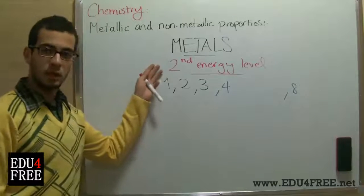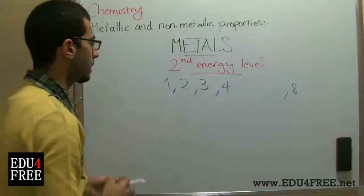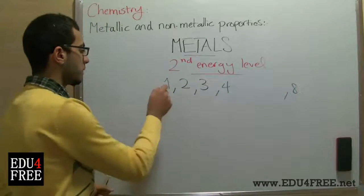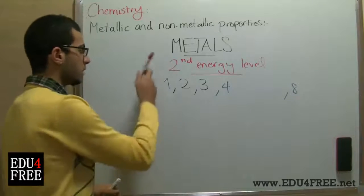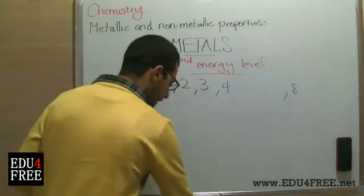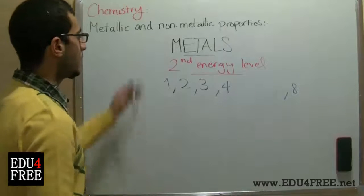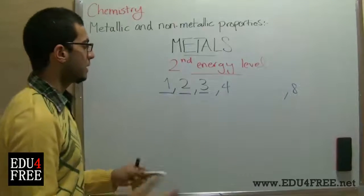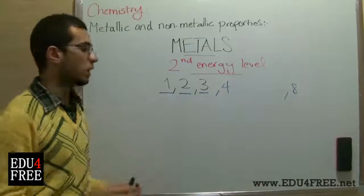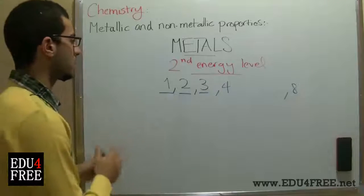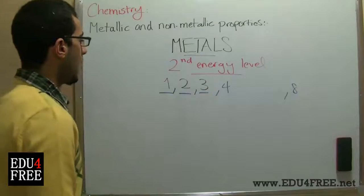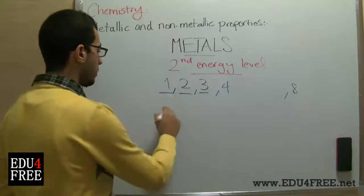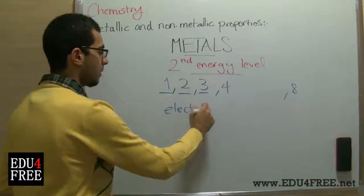We are talking about the second energy level, because the maximum capacity of the second energy level is carrying only eight electrons. So this is the first property of metals. And based on that fact, metals always lose these electrons so that they can reach the nearest noble gas structure to reach stability.